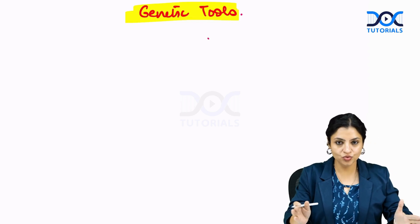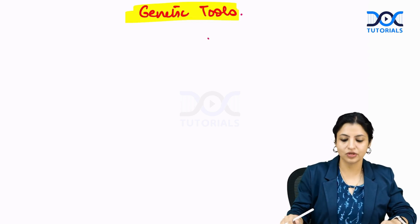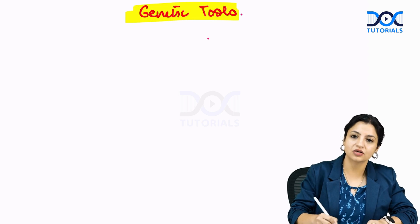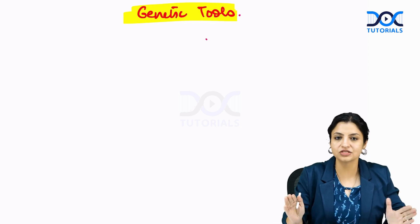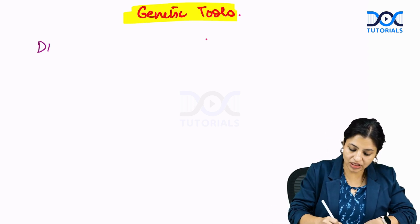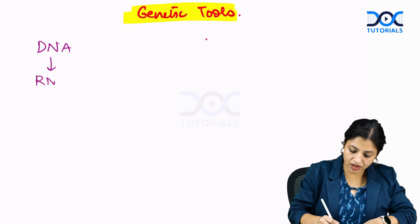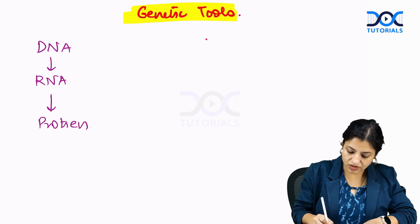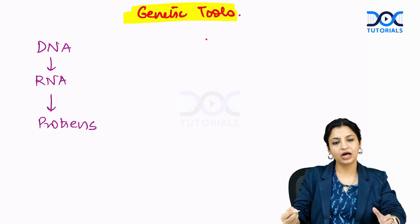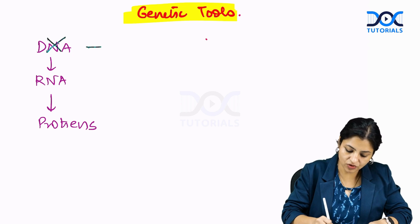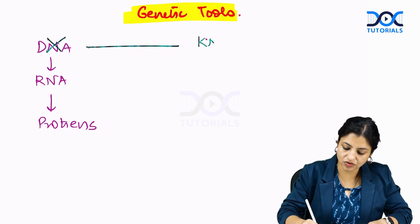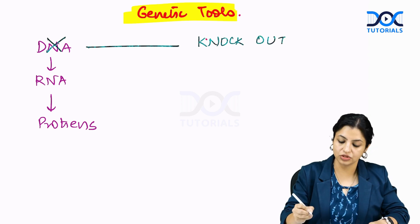Let's talk about genetic tools, which is a very important topic. Genetic tools means how we can edit our genome. Normally DNA gives rise to RNA, and RNA gives rise to proteins. You can do two things: either you can directly cut the DNA itself, which is called knockout technology.